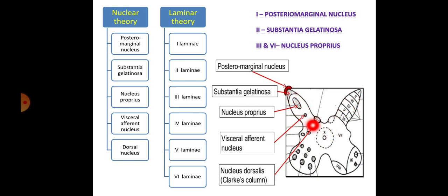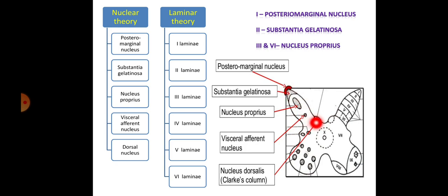First, I am going to cover the nuclear theory. The posterior grey horn is further divided into five different nuclei. The first one is posterior marginal nucleus. Second one is substantia gelatinosa. Third one is nucleus proprius. Fourth one is visceral afferent nucleus. Fifth one is dorsal nucleus of Clark. These are the five groups of nuclei of the posterior grey horn. It is very easy to remember.